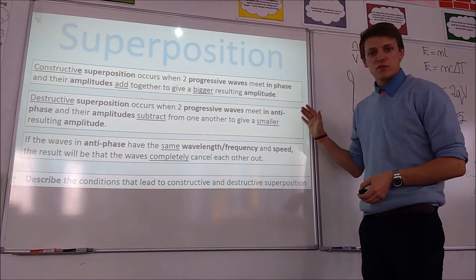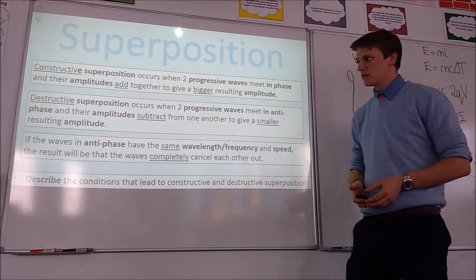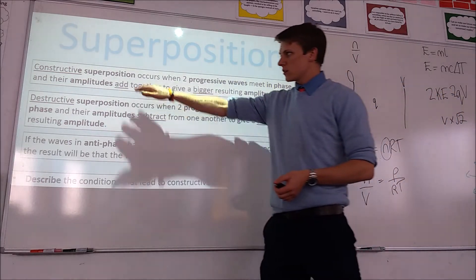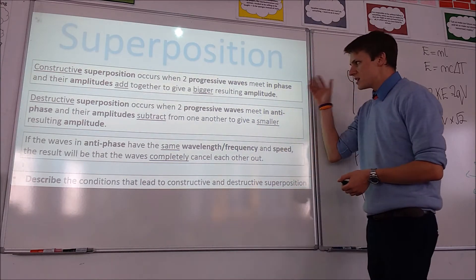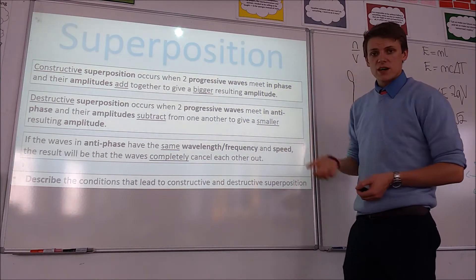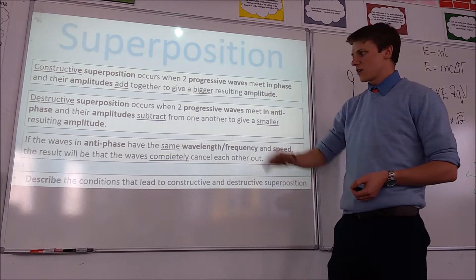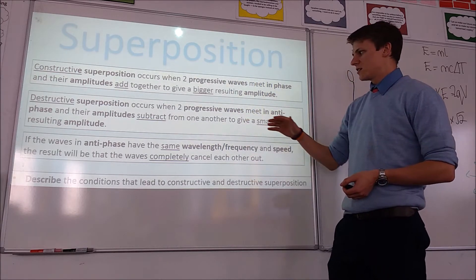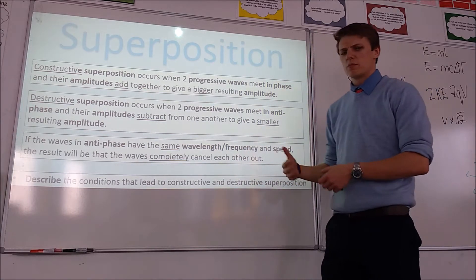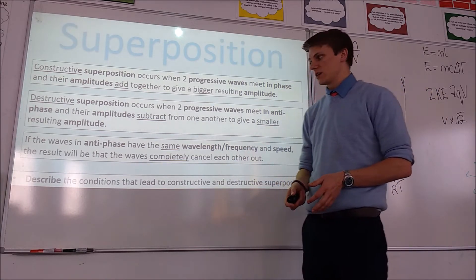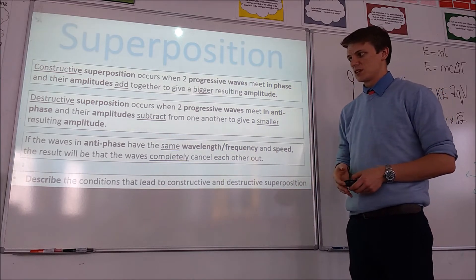Let's first recap a few things from my videos on progressive and stationary waves. If we want constructive superposition to occur — so the amplitudes add together — we need two progressive waves to meet in phase with each other. And to get destructive superposition, we need the two waves to meet in antiphase with each other, or a phase difference of 180 degrees. Those are the conditions for constructive and destructive superposition.